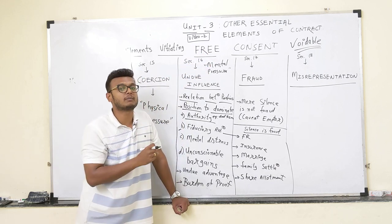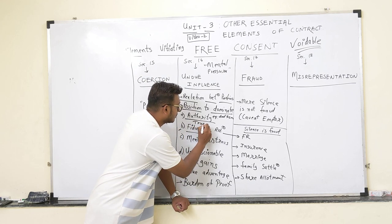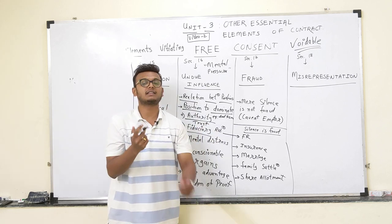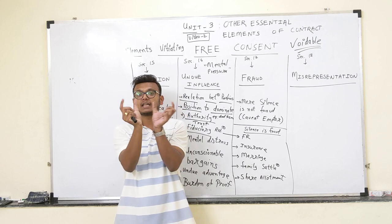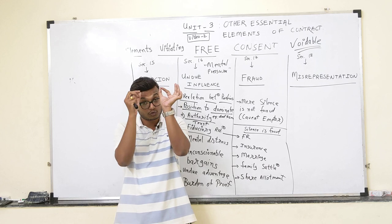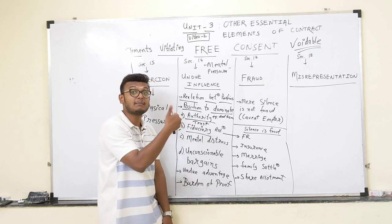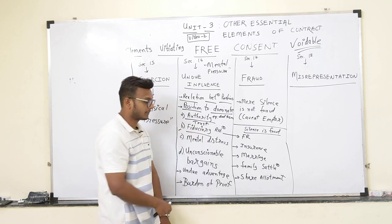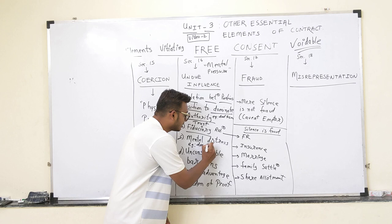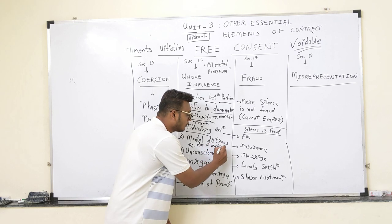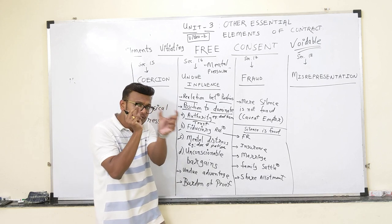Second type under position to dominate: fiduciary relationship — a trust-quality contract. Examples: advocate and client, CA and client. The advocate must know everything about the client and cannot hide anything, which means he can mentally harass the client. That comes under fiduciary relationship. Next: mental distress — for example, doctor and patient. The patient will have to do everything the doctor says because of the relationship between them.